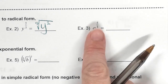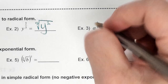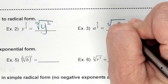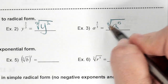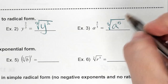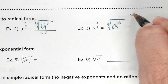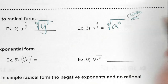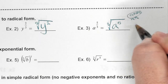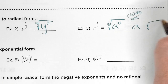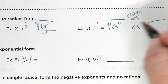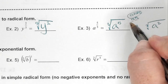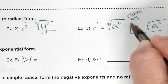What is my root? Three. And what's my exponent? Five. Does three go into five? It goes in one time with two left over. So I get a squared outside. That's my simplified form.